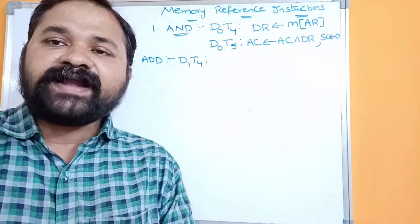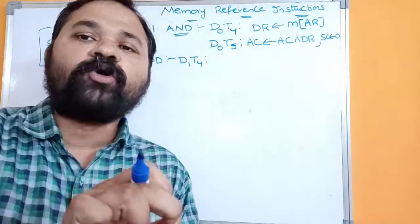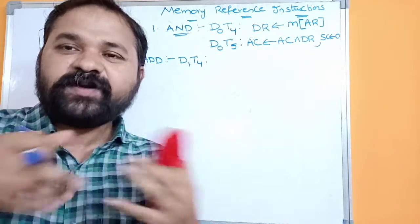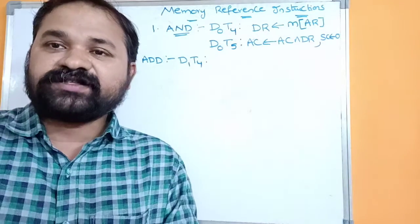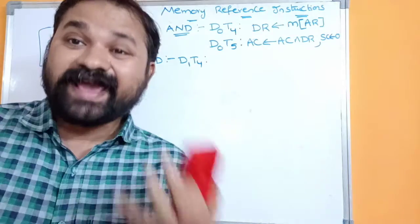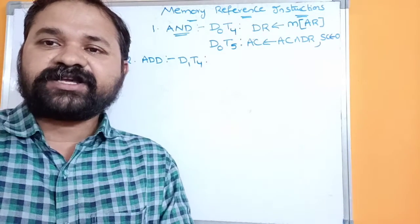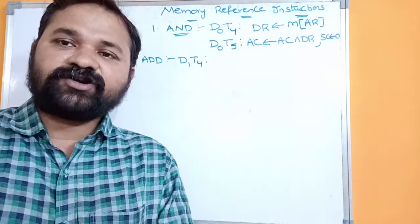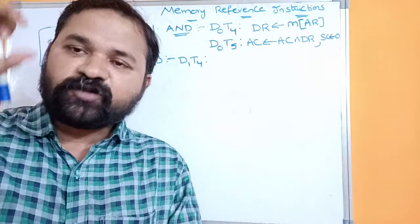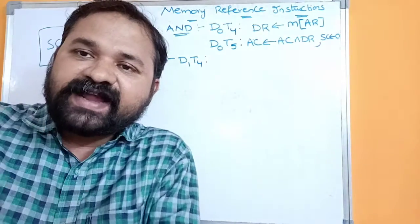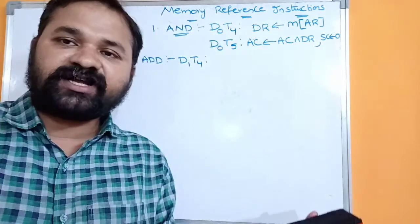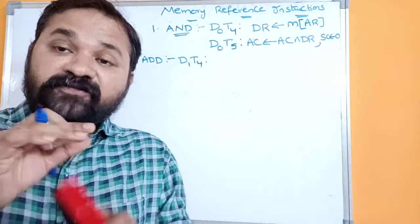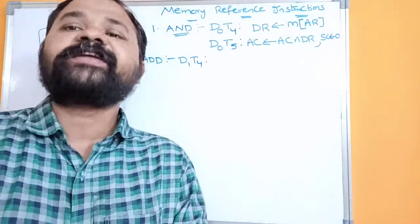ADD means add the content of the accumulator and the memory operand. We can't perform ADD operation directly with the memory operand because the arithmetic and logic circuit — the ALU — resides between the data register and accumulator in a common bus system. The ALU performs operations on the accumulator and data register. That's why we transfer the contents of the memory to the data register and perform the operation on the data register and accumulator.